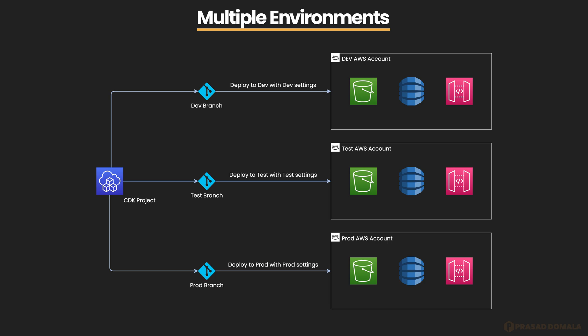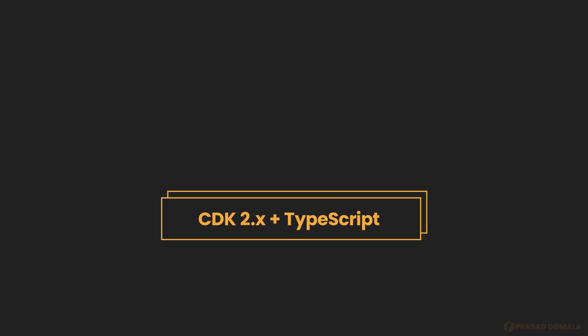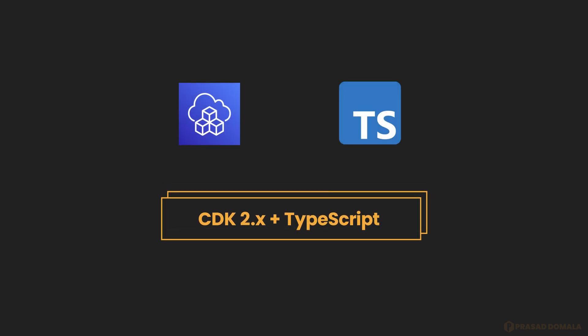In this demo I'll be using git branches to determine the environment. So if I run the deploy command from my develop branch, the infrastructure will be deployed to my dev AWS account, and will be deployed to the prod AWS account if I deploy from a master or main branch. We'll be using CDK version 2 and TypeScript. We shall create a couple of S3 buckets with encryption enabled in production and disabled in dev, and also a DynamoDB table with point-in-time recovery enabled in prod and disabled in dev.